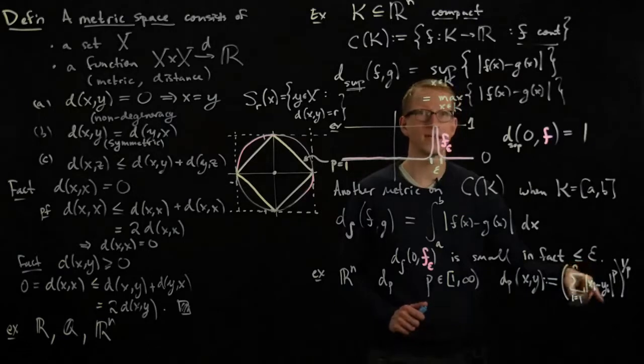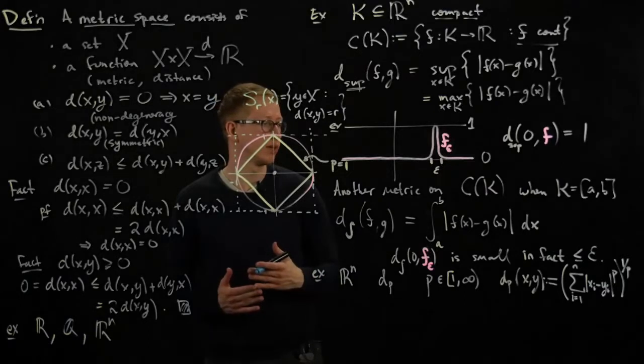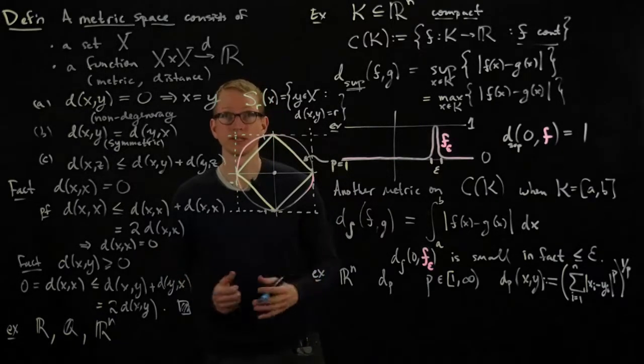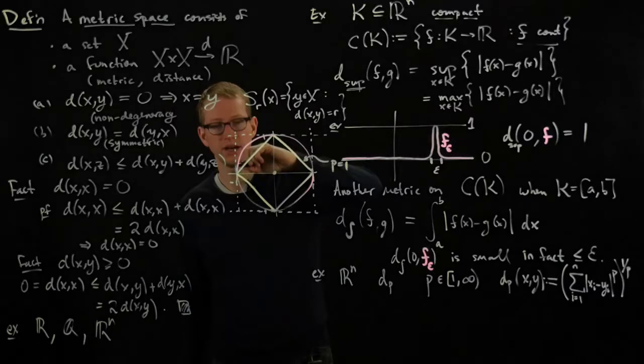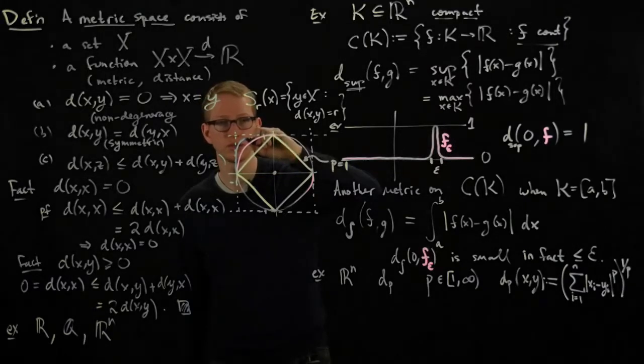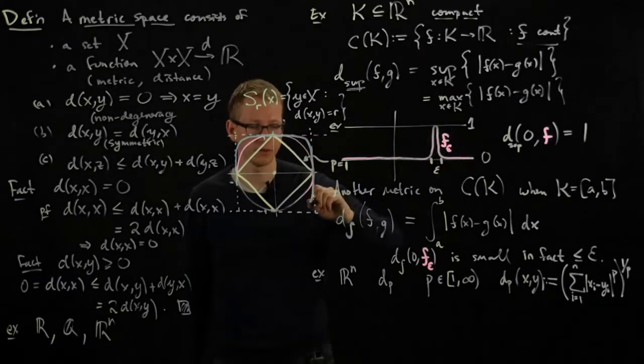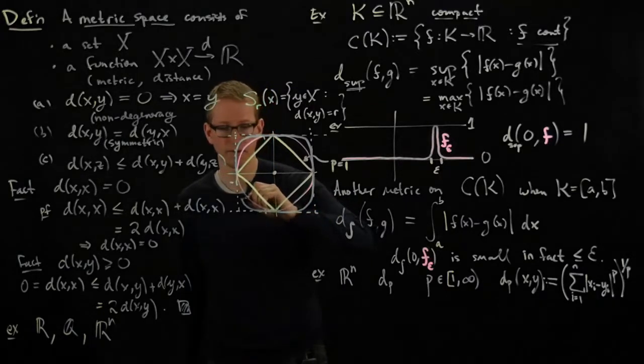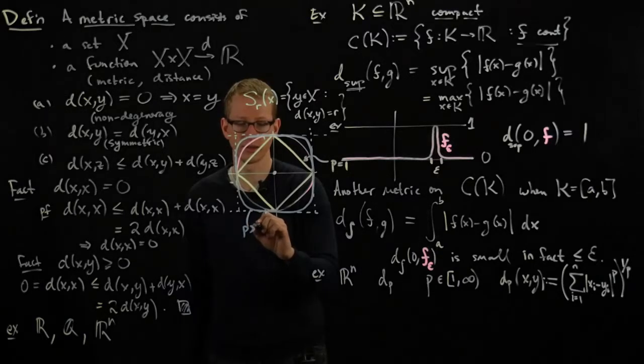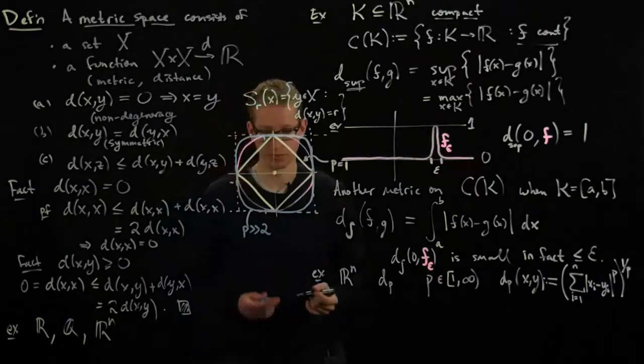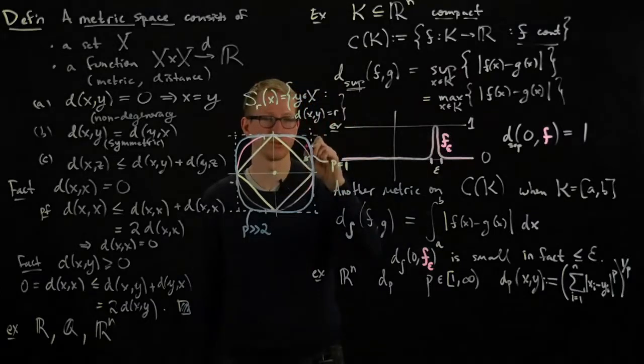And then what happens if p gets much much larger? Well, you can test this out—for instance you can plot this in Mathematica, or you can think a little bit if you've ever looked at what happens to x to the kth power or something like that as k increases or decreases. You'll notice that what happens is that this line hugs this square closer and closer, and you get something that looks like it's getting closer and closer to that square at the boundary. So this is for p much much larger than let's say 2. Let me write p equals 2 here.